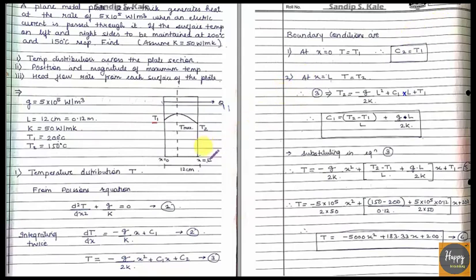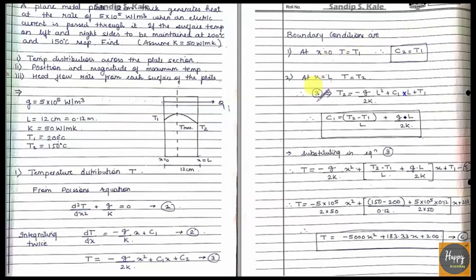Next, applying the boundary condition at the right face: at x = L, T = T2. Substituting into equation 3: T2 = −(g/2k)·L² + C1·L + C2. Since C2 = T1, after rearranging we get the value of C1. So both constants C1 and C2 are now found.